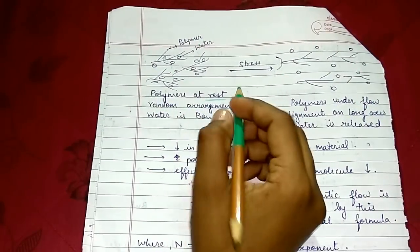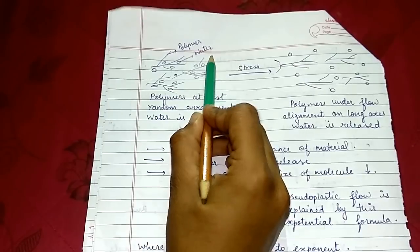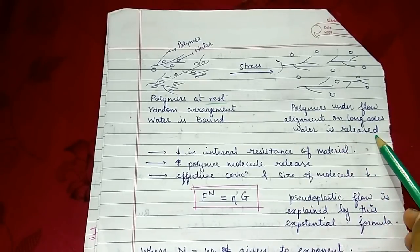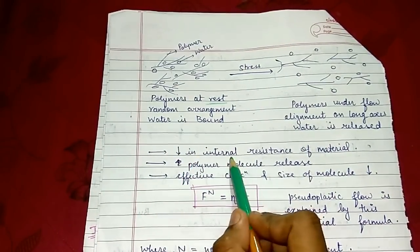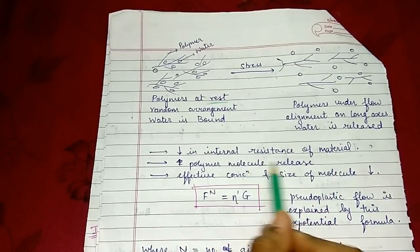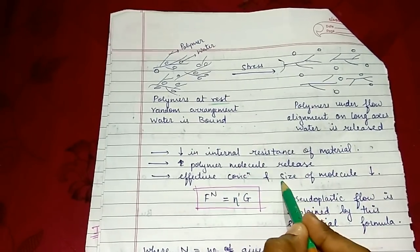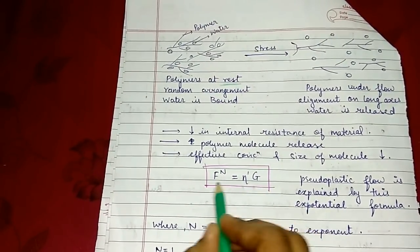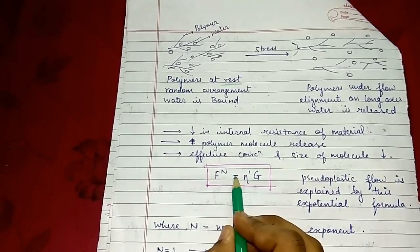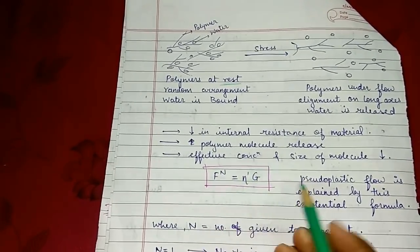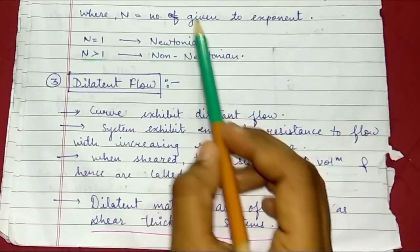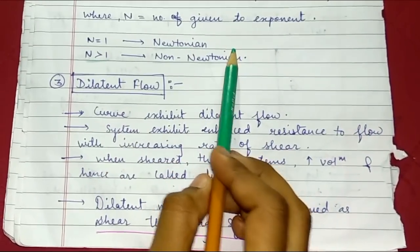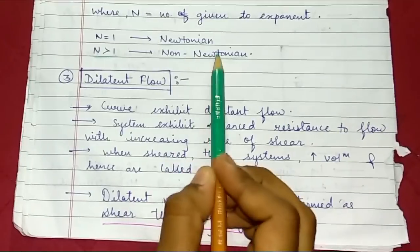Polymer at rest is in random arrangement and is bound with water. When stress is applied, polymers flow in one direction and are unbound with water. Afterwards, there is decrease in internal resistance of material, polymer molecules are released, and effective concentration and size of molecule is decreased. This formula is explained for pseudoplastic flow: F raised to N equals viscosity into rate of shear, where N is number given to exponent. If N equals 1, it follows Newtonian system. If N is greater than 1, it follows non-Newtonian system.